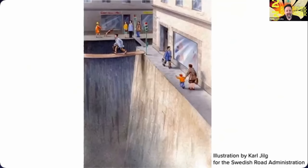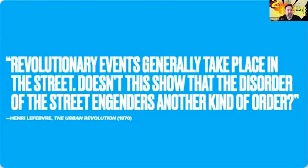You've probably all seen this brilliant illustration by the Swedish artist Karl Jilg — by depicting streets as canyons, it shows just how much space we've ceded to automobiles. This is a problem because cities should be for people, not for cars. With all that being said, I think streets are actually one of the most important places to begin returning cities to the people and working to create an urban solarpunk society, because as suggested by the French philosopher Henri Lefebvre,